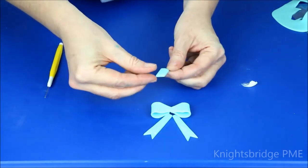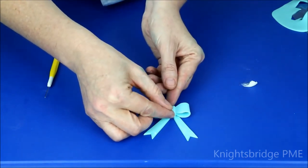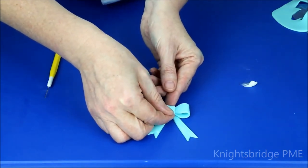And this can just sit across and tuck and around. That's literally how we create our little bow.